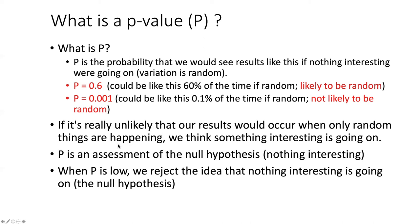So p is basically an assessment of the null hypothesis. And in this particular case, the null hypothesis is that men and women are the same height. But in general, in all statistical tests, the null hypothesis is some form of nothing interesting is going on. These things are the same. They're not really doing anything.